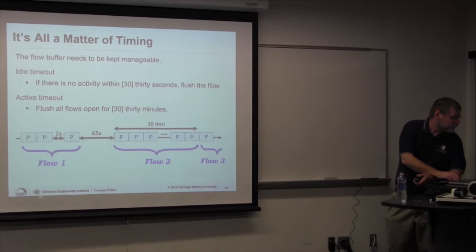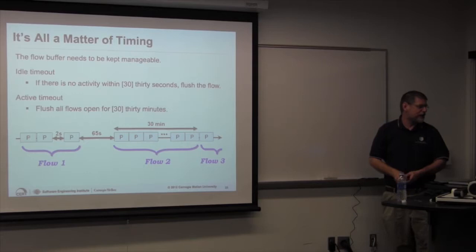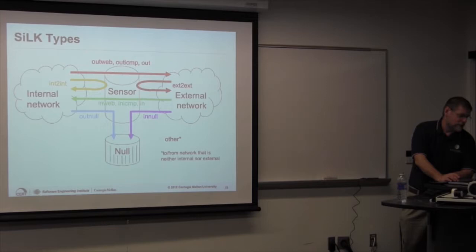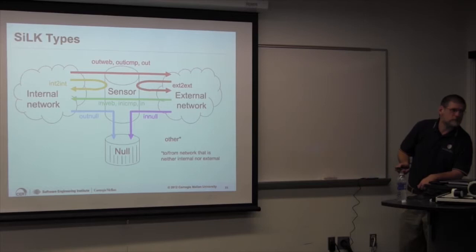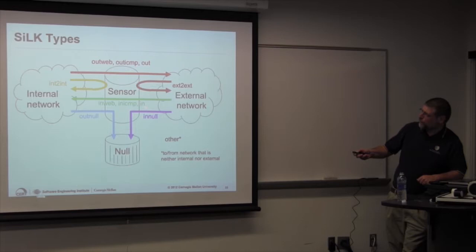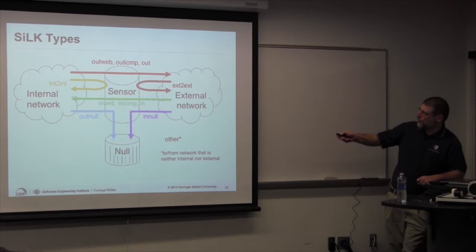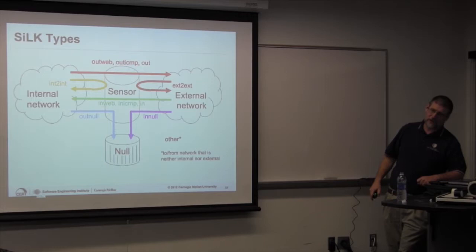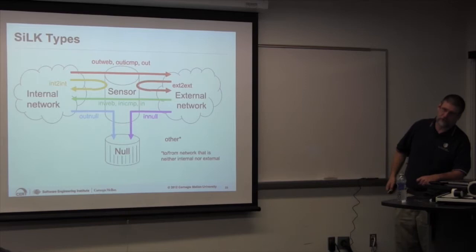The active timeout and idle timeout were already discussed. The basic flow types are in, out, in-web, out-web. If you set up silk on your home network and fail to configure the addresses in sensor.conf, all your traffic looks like external-to-external. If you have everything configured and still see external-to-external traffic, one possibility is you're providing transit to someone — which you might not want to be doing.